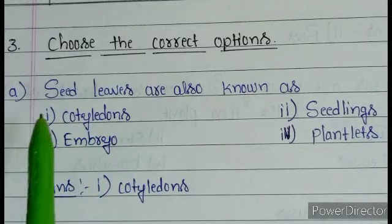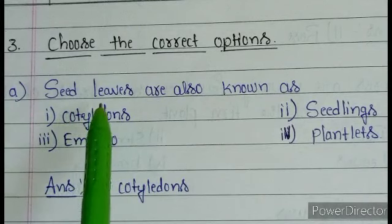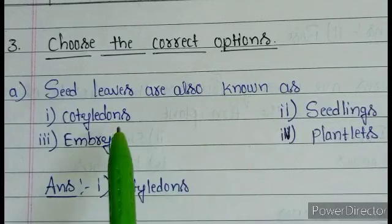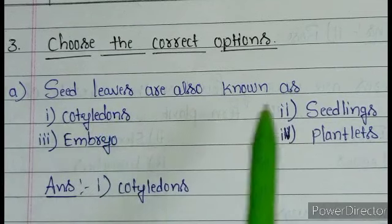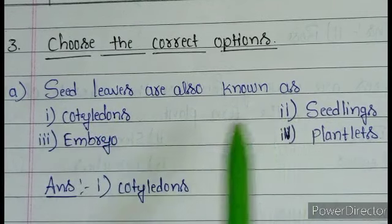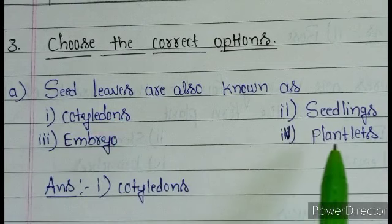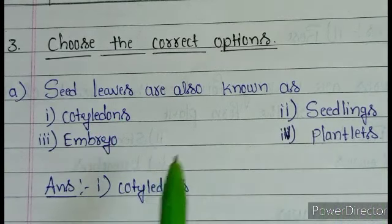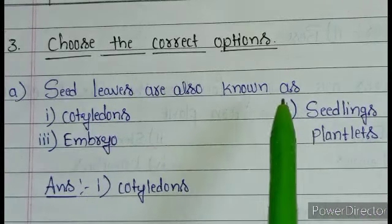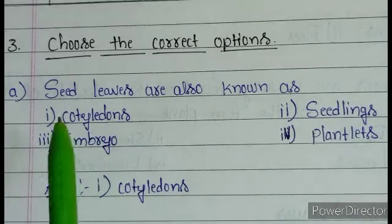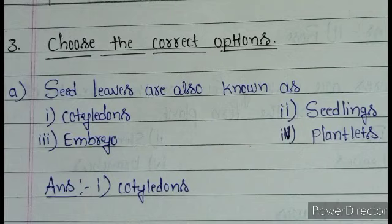Next, choose the correct options. Question A: seed leaves are also known as — first option cotyledons, second option seedlings, third option embryo, fourth option plantlets. Seed leaves are also known as cotyledons, so the answer is the first option, cotyledons.